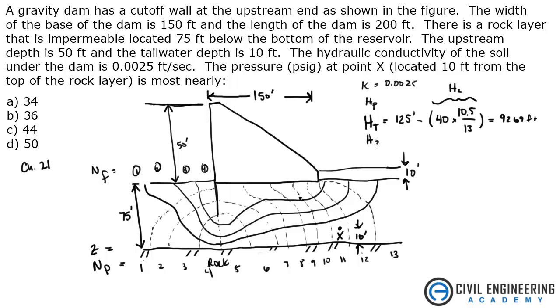Now we know the elevation head, Hz, is going to be 10 feet from our datum. We know that the total head is basically your pressure head plus your elevation head. So our pressure head is going to be our total head minus our elevation head. We take 92.69 and subtract 10, that gives me 82.69 feet.